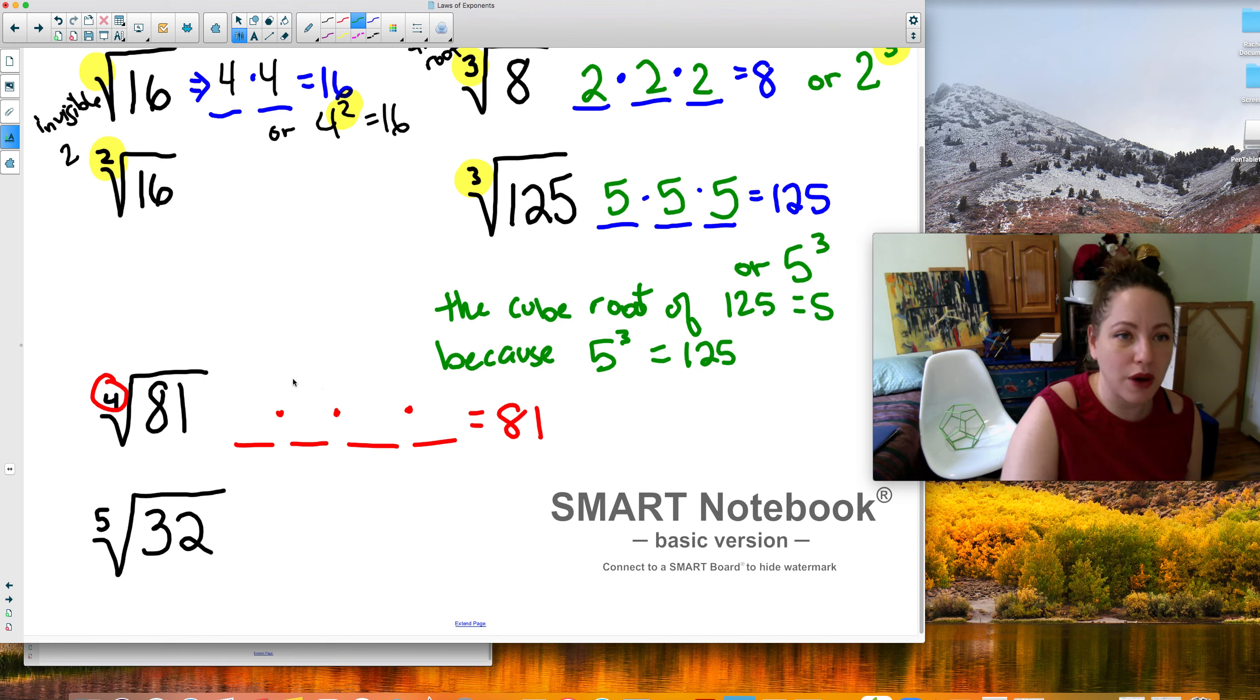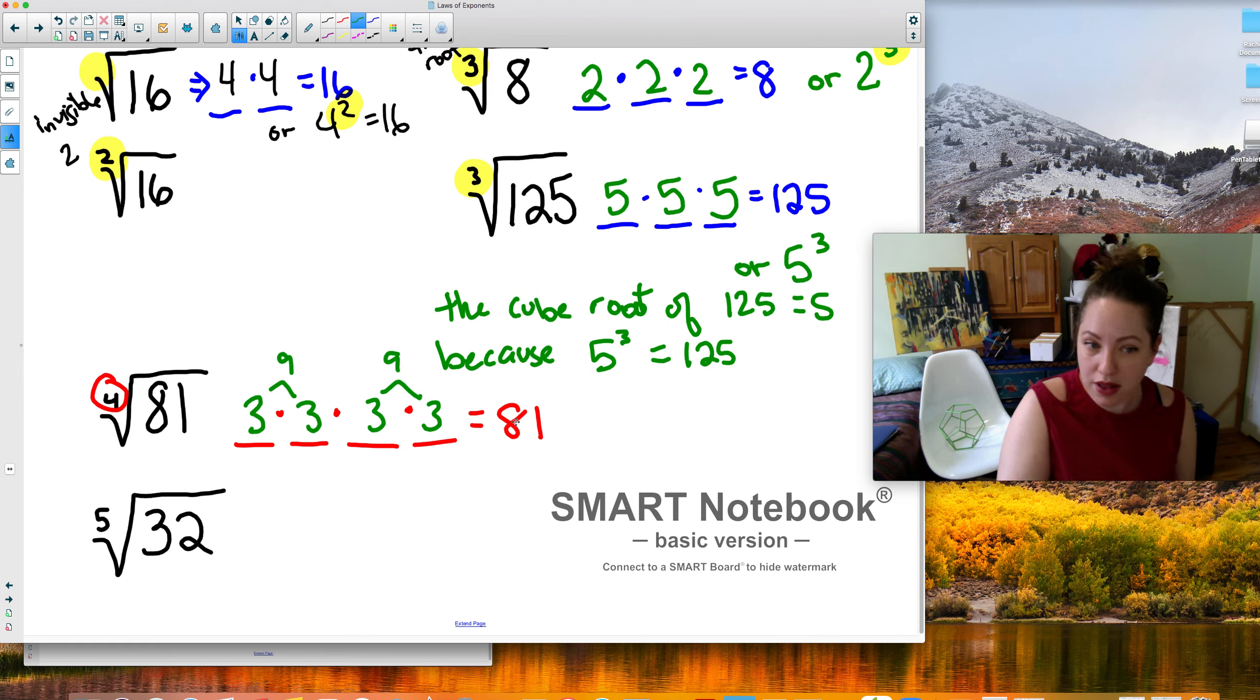So if you multiply the same number 4 times is going to equal 81. Well, just try a couple numbers and you're going to see it's 3. And then if you think about it, that kind of makes sense. Because 3 times 3 is 9. 3 times 3 is 9. And 9 times 9 is 81. That works. So 3 to the fourth equals 81. So the fourth root of 81 equals 3. So you would just write 3 in as your answer.